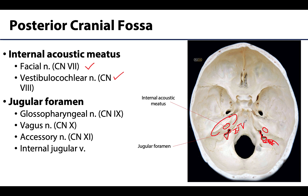Additionally, three cranial nerves exit the skull via the jugular foramen: the glossopharyngeal nerve (cranial nerve IX), the vagus nerve (cranial nerve X), and the accessory nerve (cranial nerve XI), which innervates the sternocleidomastoid and trapezius muscles.